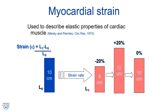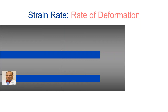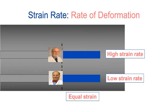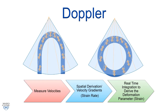Strain rate is a completely different parameter — it is the rate at which objects either shorten or lengthen. For example, Dr. Oryjema and Dr. Lange both covered the same distance from start to finish line — they have equal strain. But Dr. Oryjema moved slower, so he has a lower strain rate. It is entirely possible to have equal strain but a different strain rate.